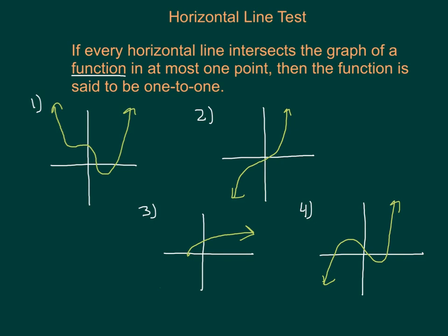Let's look at a couple of examples. In example one, we can draw a horizontal line and we can see that it does intersect the graph in more than one spot, so graph number one is not one-to-one. Graph number two—you can see clearly that a horizontal line is only going to hit this graph in one spot at any given point, so graph number two is one-to-one. Graph number three is also one-to-one. Notice it does not have a domain of all real numbers, but it is still a one-to-one function. And number four would not be one-to-one.